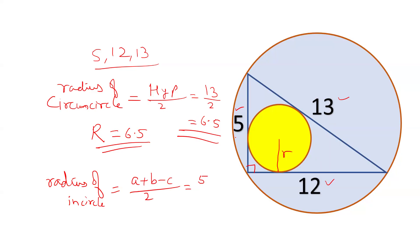So, what are A, B, and C? A and B are the perpendicular sides, and C is the hypotenuse. So, 5 plus 12 minus 13 by 2. 5 plus 12 is 17, minus 13 is 4, by 2, that is 2.